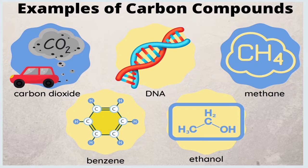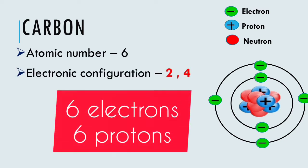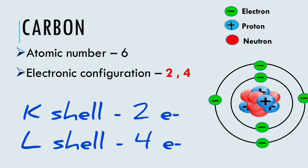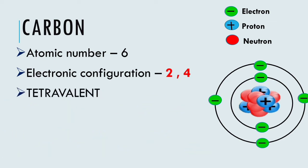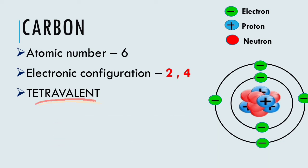The element carbon has symbol C with atomic number 6. That means it contains 6 electrons and 6 protons. Hence, the electronic configuration of carbon will be 2, 4 — meaning in the K shell there are 2 electrons and in the L shell there are 4 electrons. Since it has 4 electrons in the outermost shell, its valency is 4 and we say that carbon is a tetravalent element.